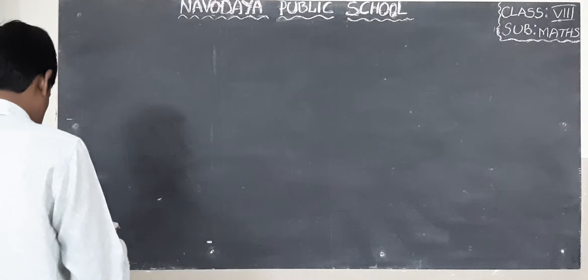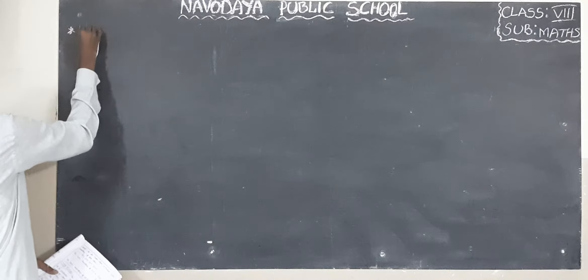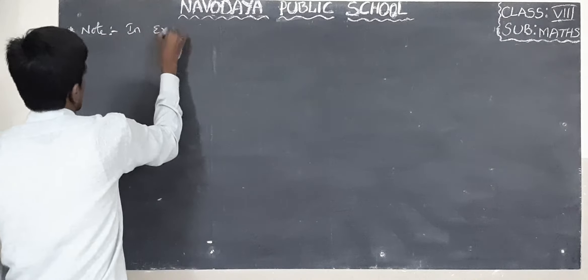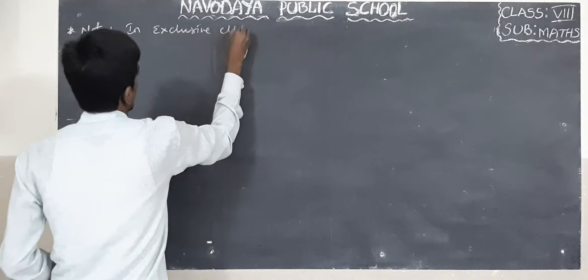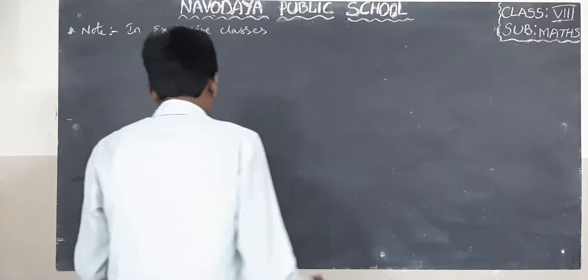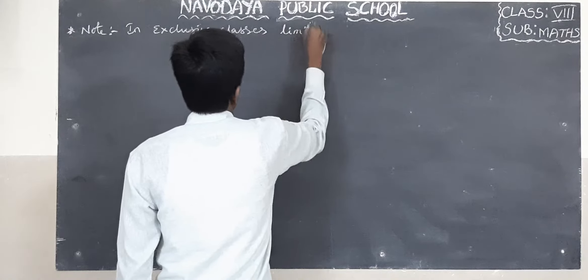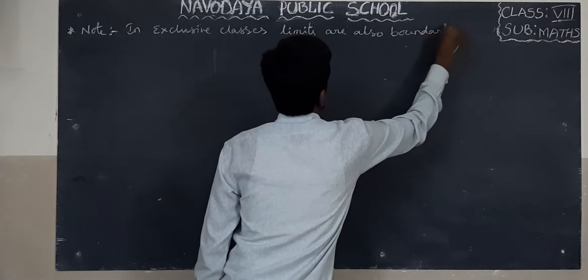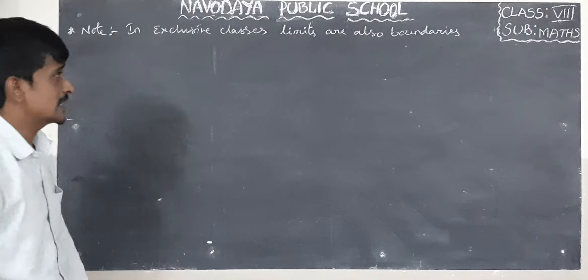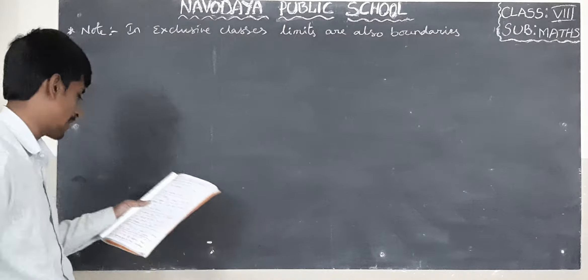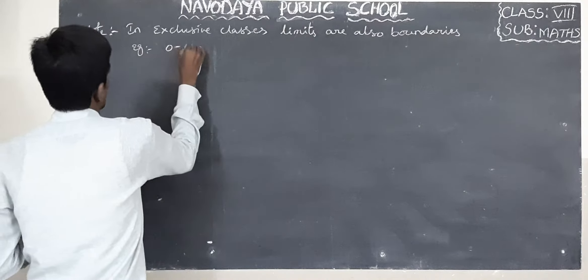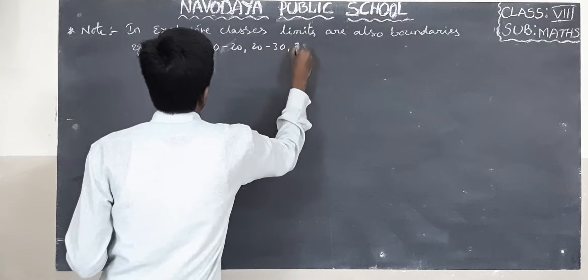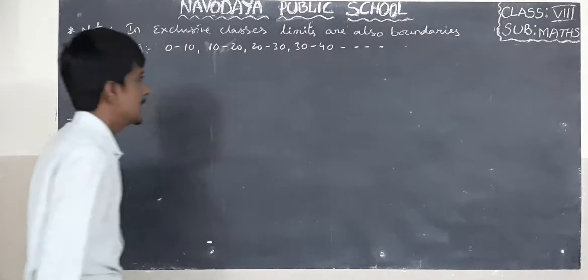Note: In exclusive classes, limits are also boundaries — both are the same. For example, 0 to 10, 10 to 20, 20 to 30, 30 to 40, and so on are exclusive classes. In these exclusive classes, the upper boundary and upper limit of any class — for example 20 to 30 — is 30.